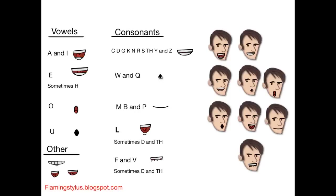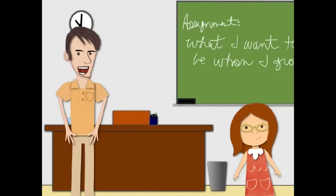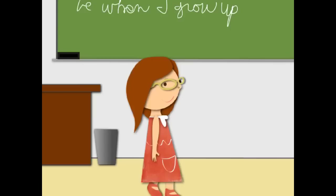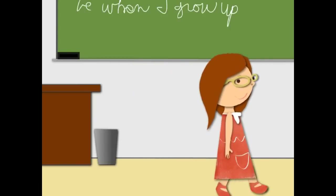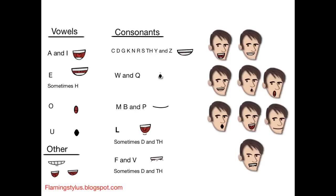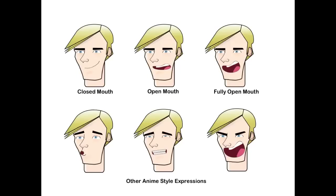Lip syncing is also something that can be done with frame switching. This is the dialog sheet that I used to cut the teacher's mouth shapes from. This gives us 12 mouth shapes to work with. 12 is actually a lot of mouth shapes to work with in PhotoPuppet, so I recommend an anime style of lip syncing which really relies on three basic shapes.